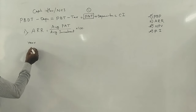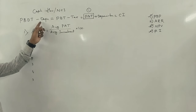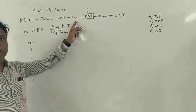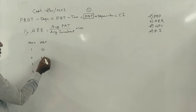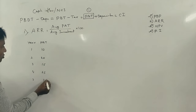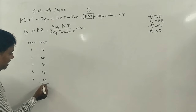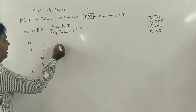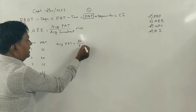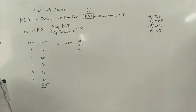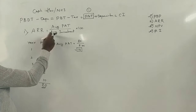Here, for years 1 through 5, we set up columns: PBDT, minus depreciation, gives profit before tax (PBT), minus tax, gives profit after tax. Sum all profit after tax values and divide by the number of years to get average profit after tax.